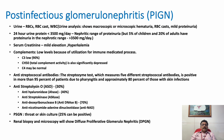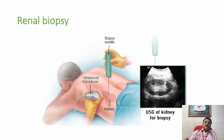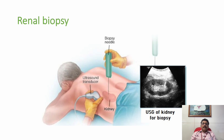In post-streptococcal glomerulonephritis, skin and throat cultures can be sent — 25 percent of patients may show positivity for streptococcal organisms. Renal biopsy should be done in patients with post-infectious glomerulonephritis, which can show diffuse proliferative glomerulonephritis. Renal biopsy is indicated in all patients with acute glomerulonephritis to make a proper diagnosis, as the ideal investigation in all types of glomerulonephritis.